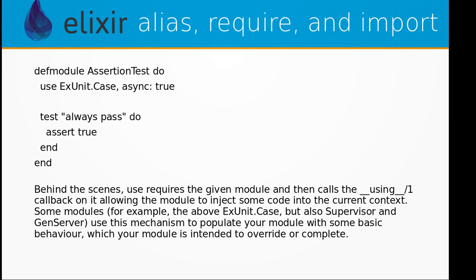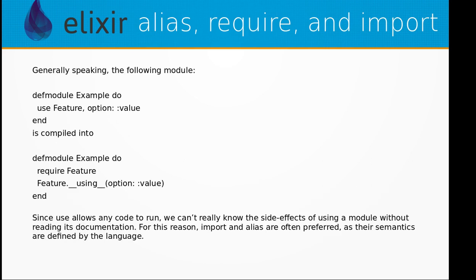Behind the scenes, use requires the given module and then calls the __using__ callback on it, allowing the module to inject some code into the current context. Some modules — for example ExUnit.Case, but also Supervisor and GenServer — use this mechanism to populate your module with some basic behavior which your module is intended to override or complete.